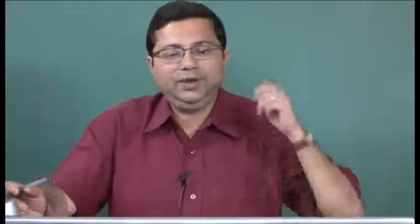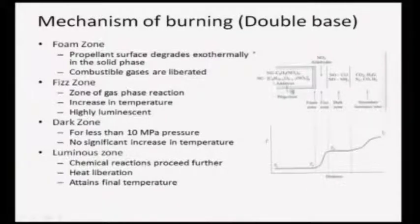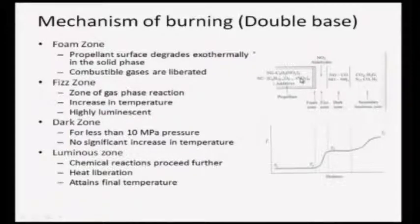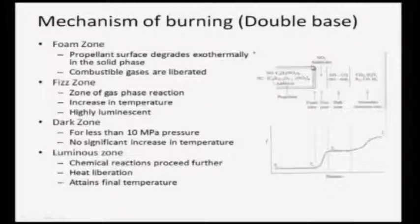Let us talk about the mechanism of burning - how do solid propellant rockets burn? Starting with double base: here is a schematic. It is a mixture of nitroglycerin (NG) and nitrocellulose (NC) plus additives - a fairly homogeneous double base propellant. In the combustion of these propellants, any solid propellant goes through a particular process. The first process is pyrolysis, where because of the supply of certain energy, the propellant starts to evaporate from the surface.